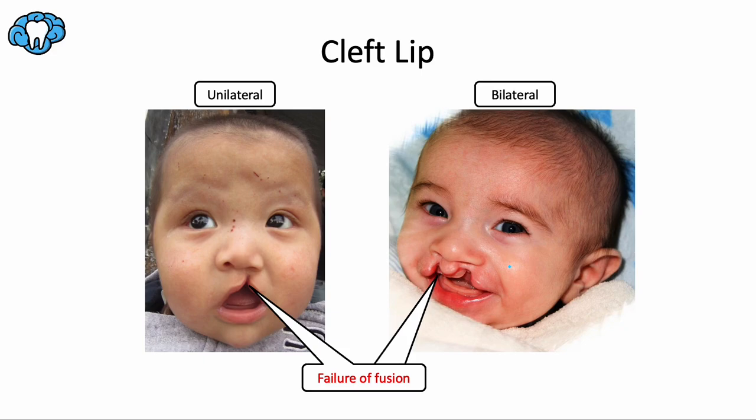Risk factors include family history — there is a genetic component — as well as smoking, diabetes, and folic acid deficiency. Problems that come with cleft lip include feeding difficulties, speech development, and recurrent ear infections. Specific dental issues involve natal and neonatal teeth, as well as delayed tooth eruption.